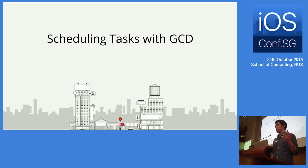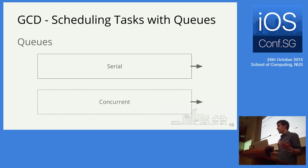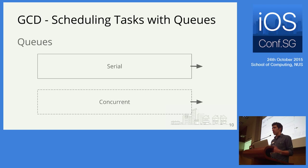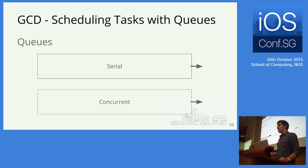When you schedule a task with GCD, you bundle your work into a block and put it onto a queue. GCD has two kinds of queues: serial queues, which run one block at a time, and concurrent queues, which can run multiple blocks at a time. Like any queue structure, both run blocks in first-in, first-out order. Throughout the examples, a solid-line box represents serial queues and a dashed-line box represents concurrent queues.